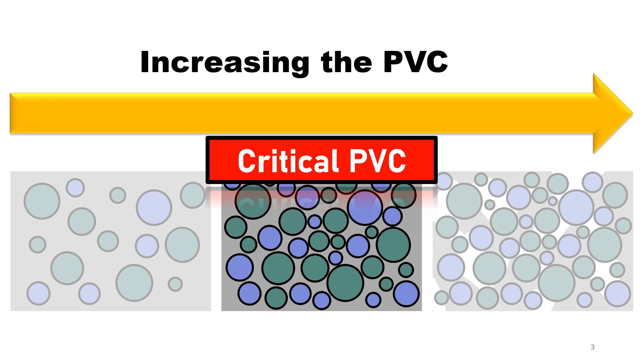If you add only slightly more pigments beyond the CPVC, you will immediately get voids or spaces that are filled with air.